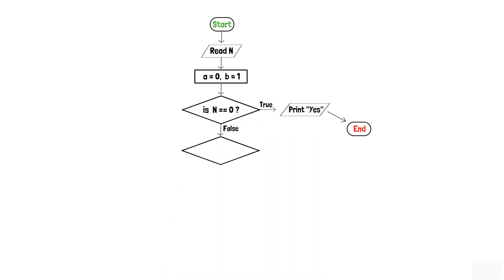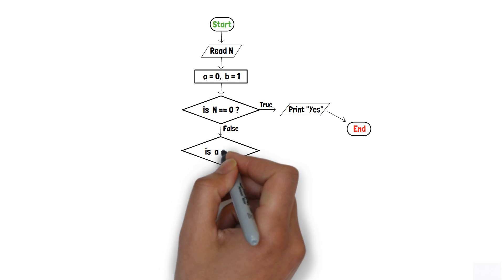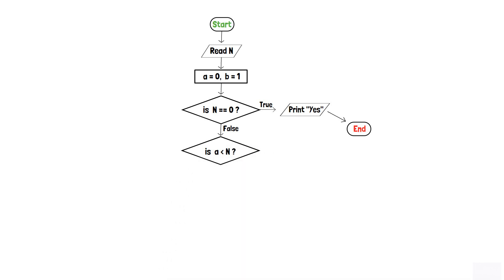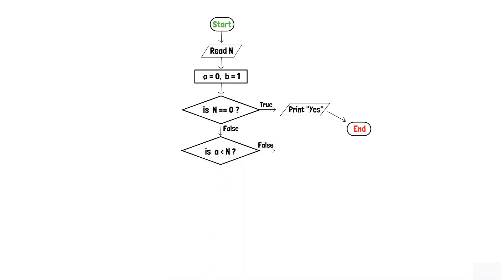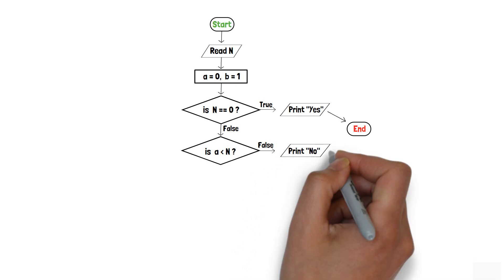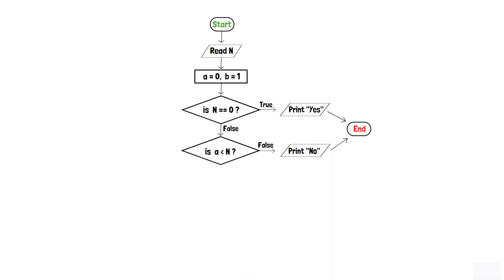We then add a second decision box to check whether a is less than n or not. If a is not less than n, that means the integer n is not part of the Fibonacci sequence, and hence we will print no using an output component and terminate the program.